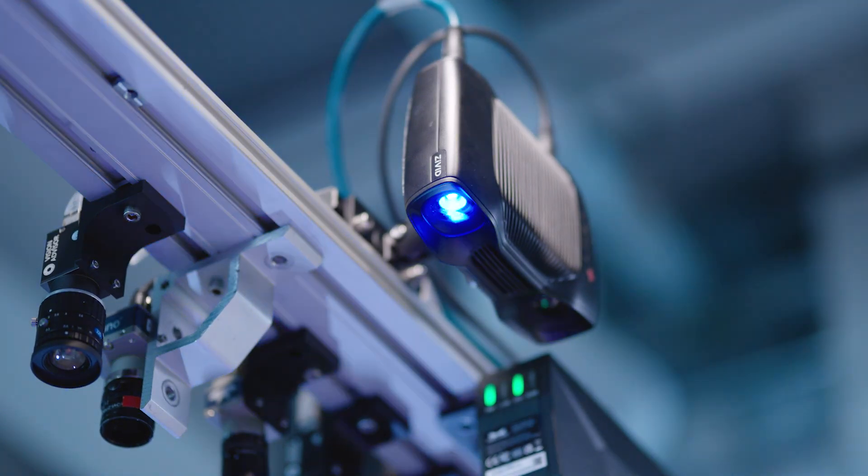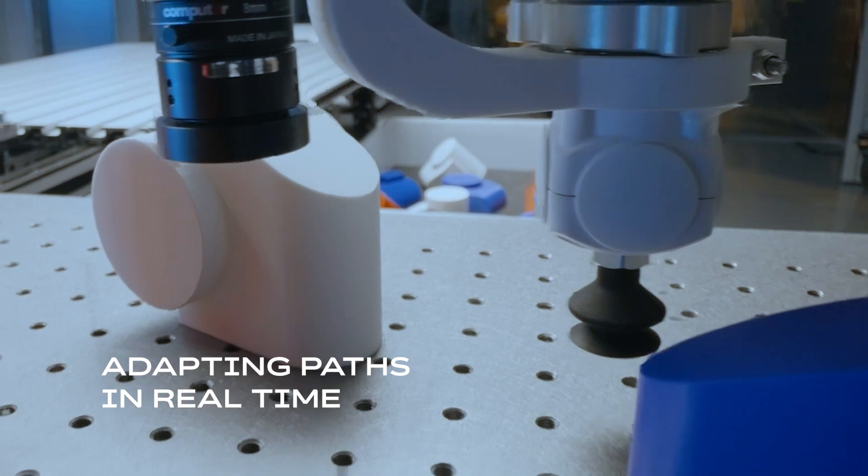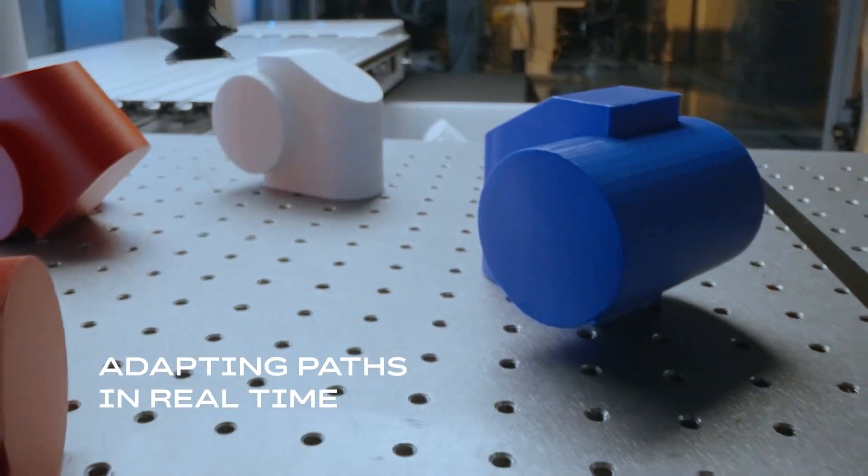In this demo, you'll see the vision system recognize similar shapes in different colors and the robot instantly adapts if we move the object during its task.